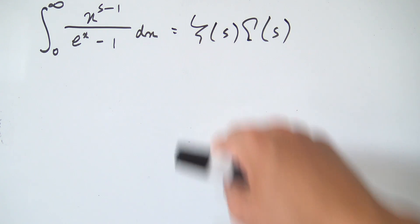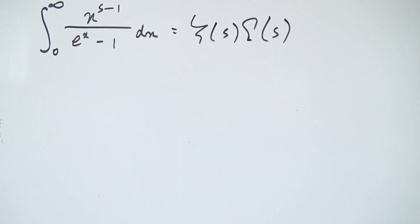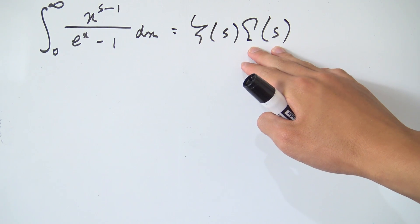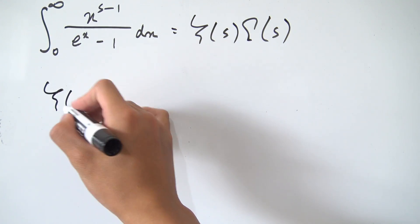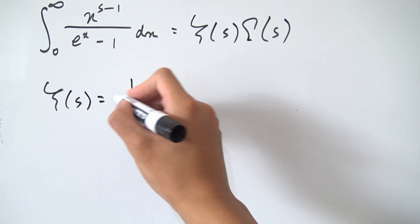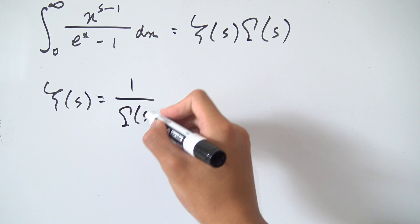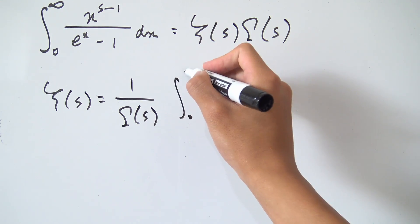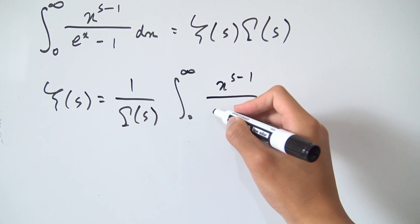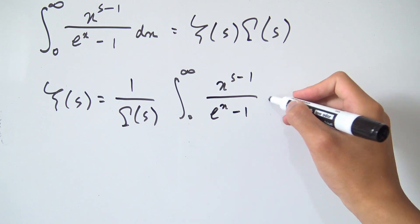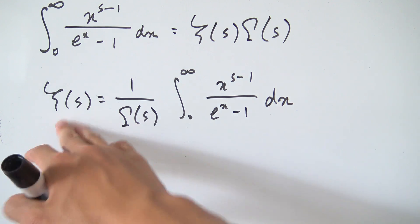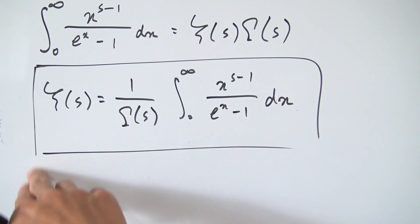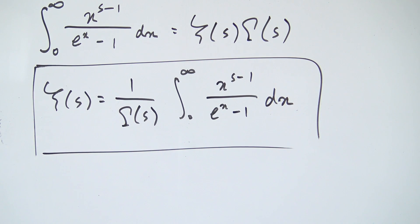If we want an integral representation of the zeta function, we can isolate zeta by dividing both sides by gamma of s. So zeta of s equals 1 over gamma of s times the integral from 0 to infinity of x to the s minus 1 over e to the x minus 1 dx. That is one of the integral representations of the Riemann zeta function. I hope you enjoyed this video and I'll see everyone next time.